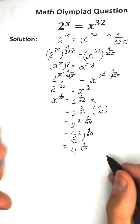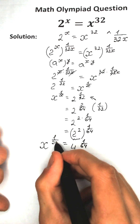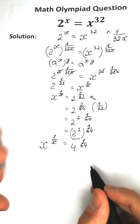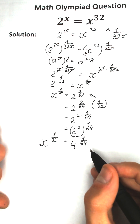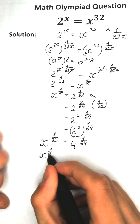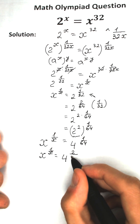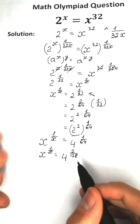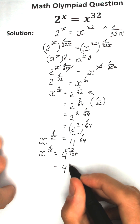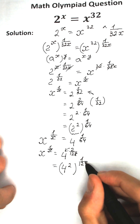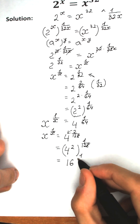Let's do the same step once more. We have x to the power 1 over x equal to 4 to the power 1 over 64. Multiply numerator and denominator by 2: that becomes 4 to the power 2 over 128. Applying the same logic, 4 squared to the power 1 over 128 gives us 16 to the power 1 over 128.